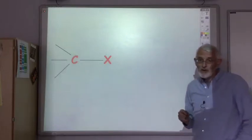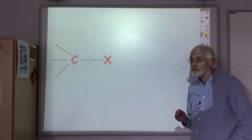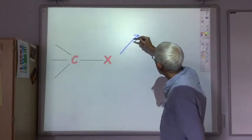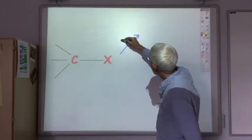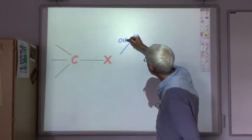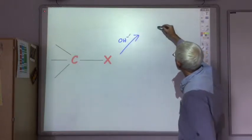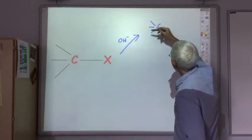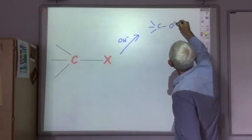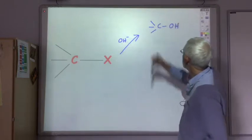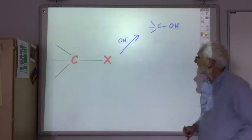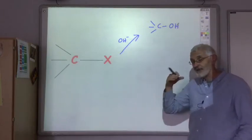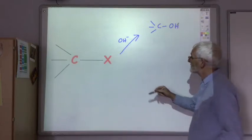We're going to look at three reactions. In the first case, if our nucleophile is a hydroxide ion, we swap the halogen for OH⁻ and we make an alcohol. So we can easily turn haloalkanes into alcohols.